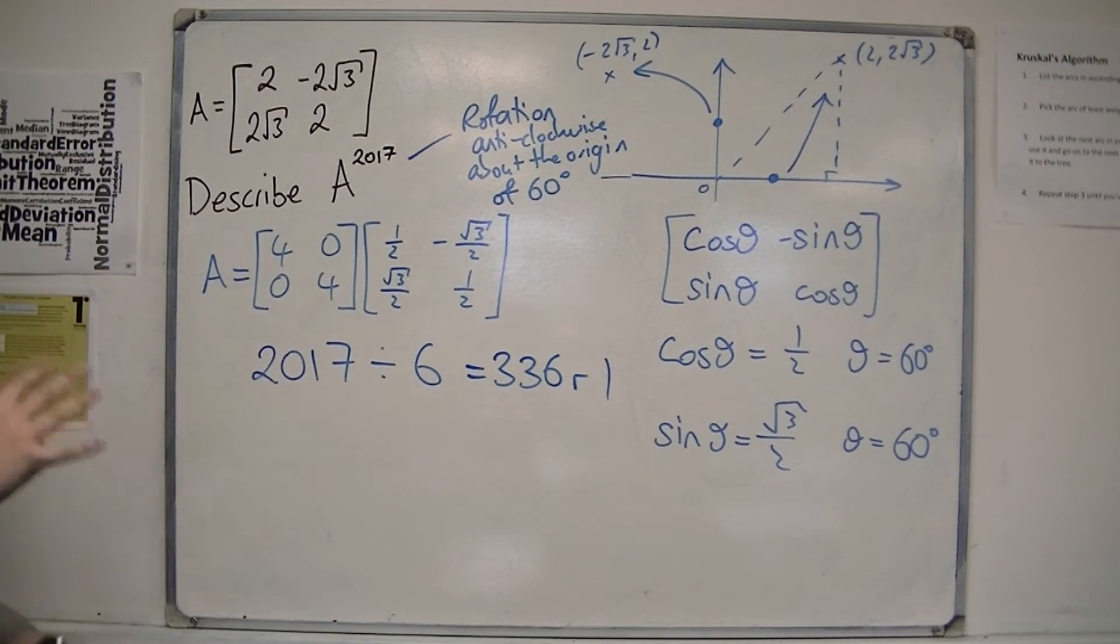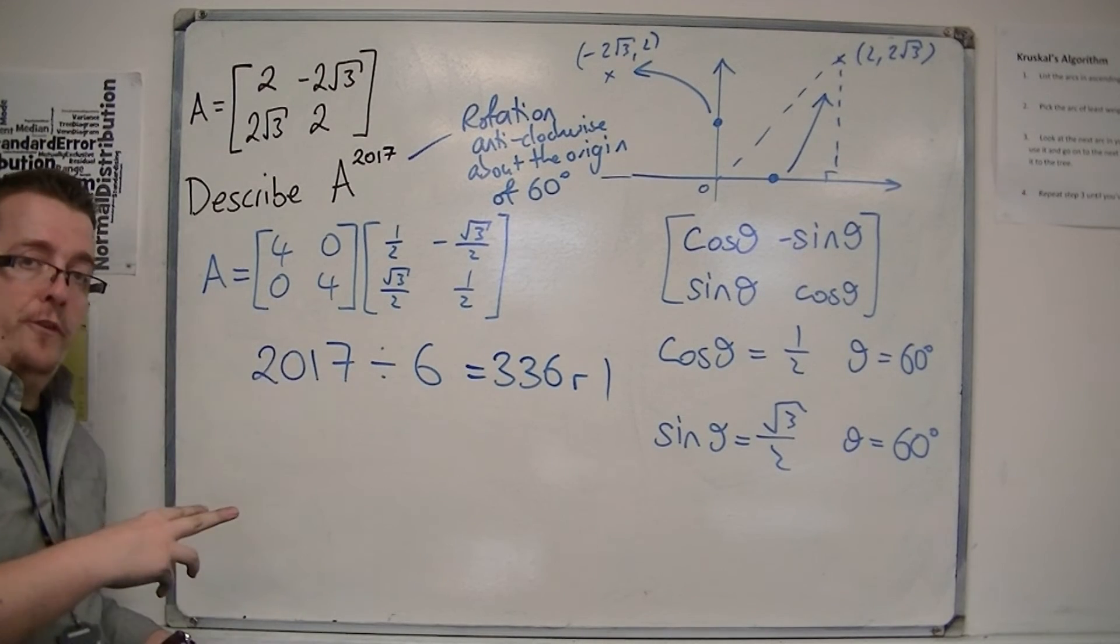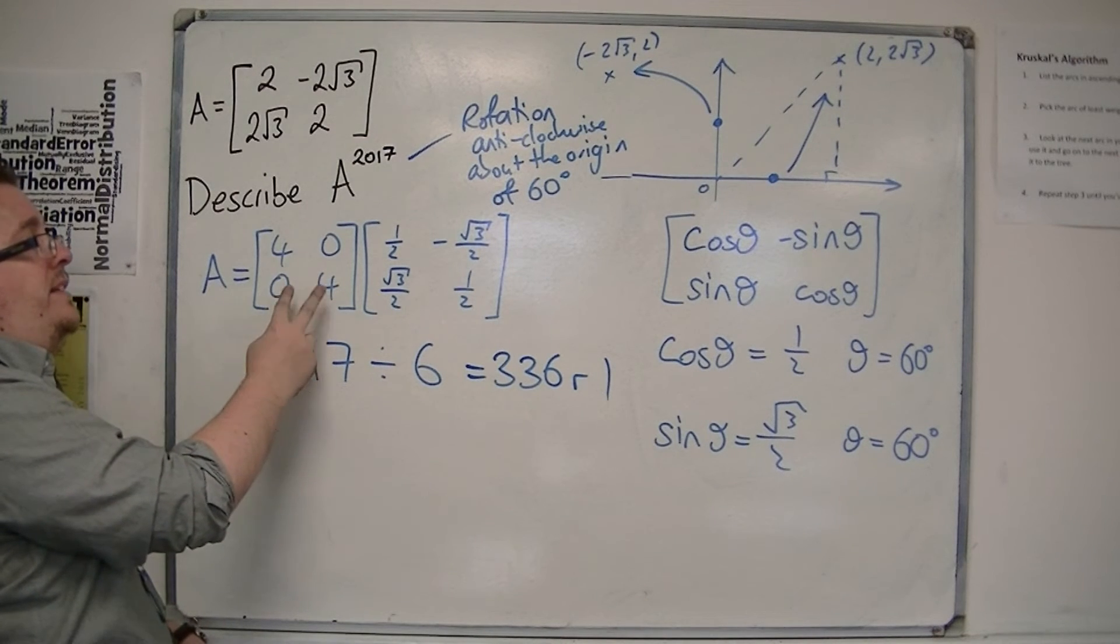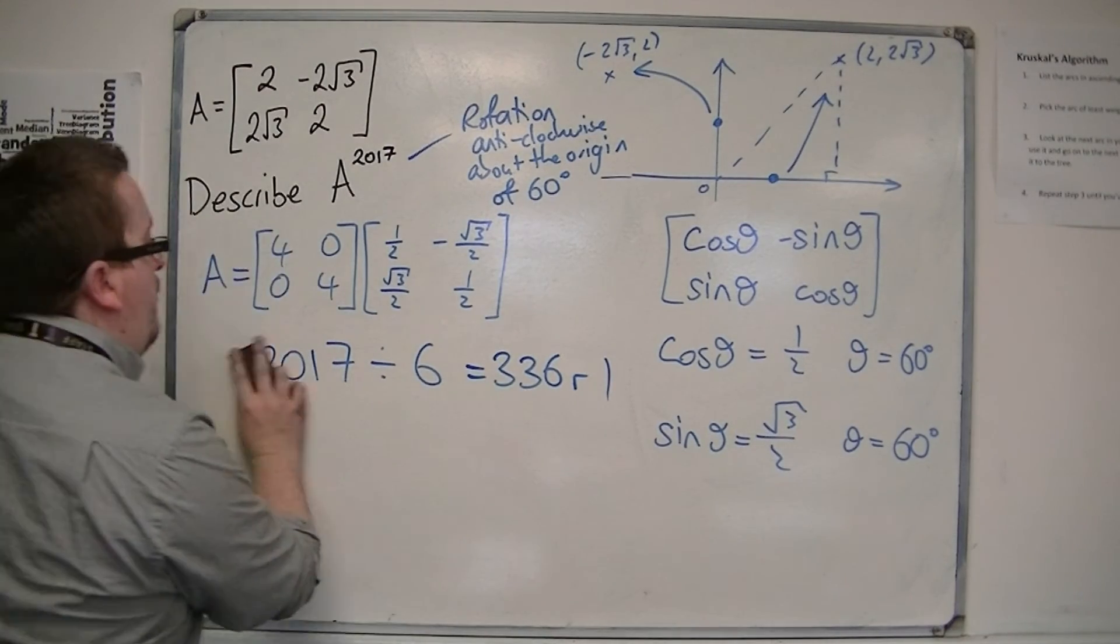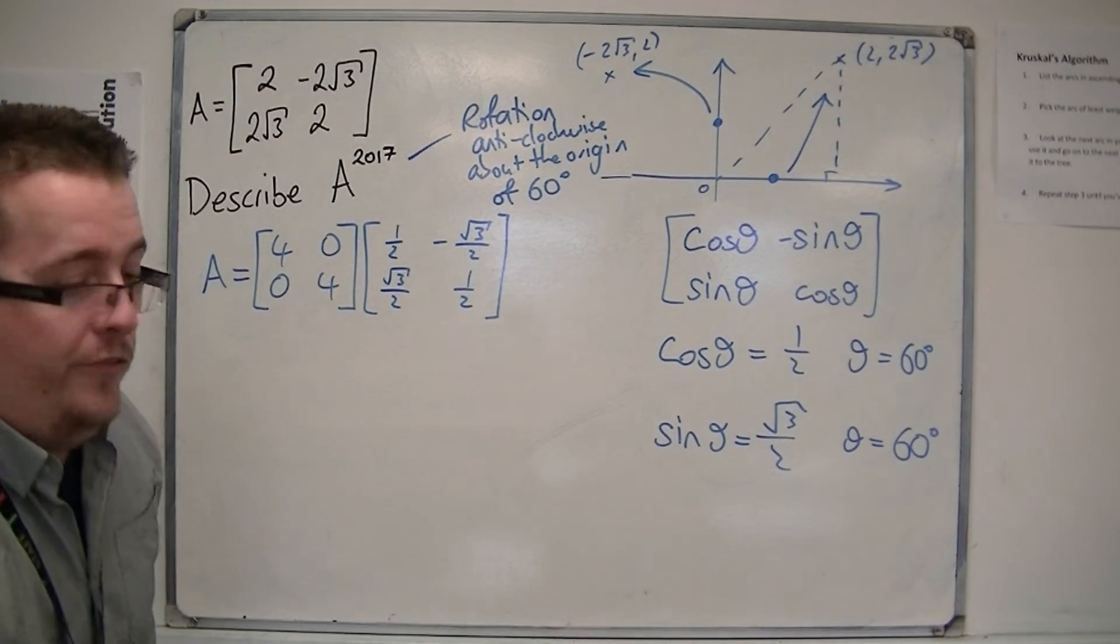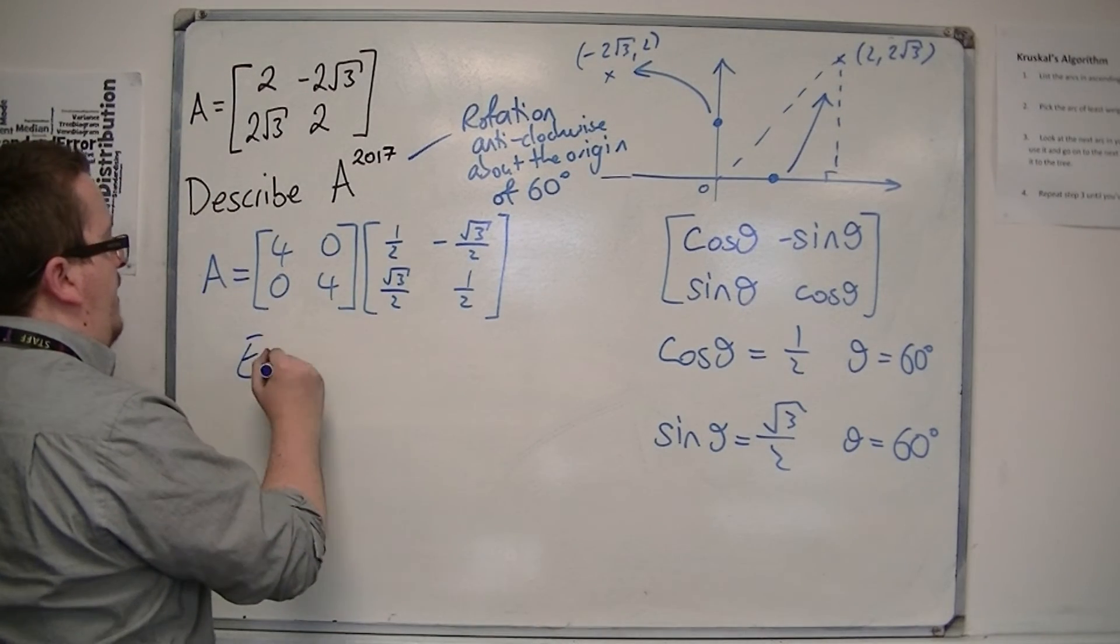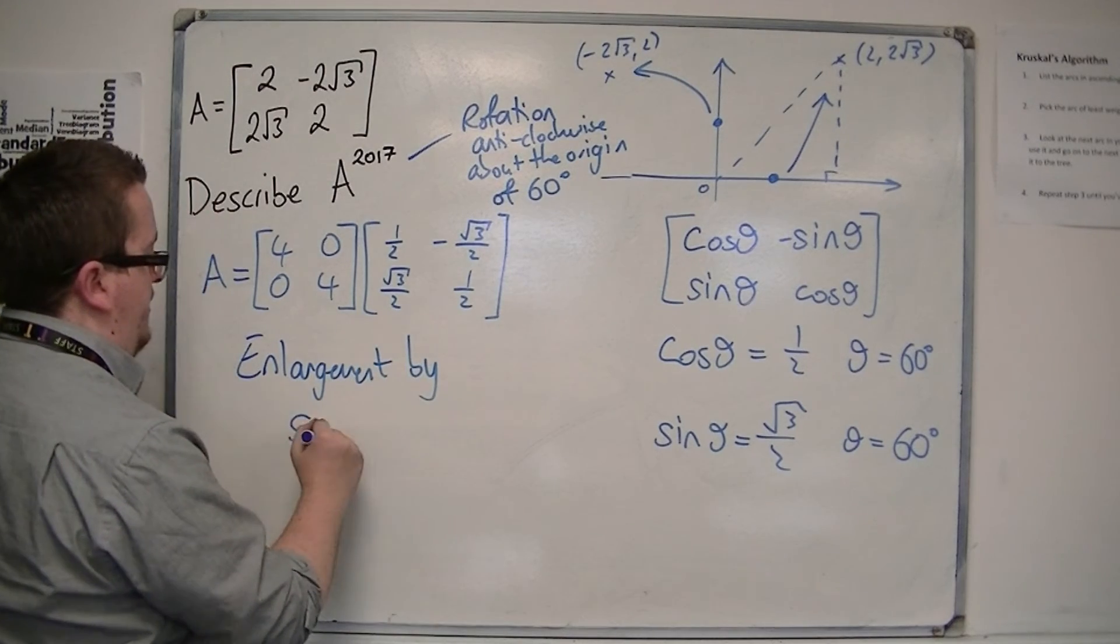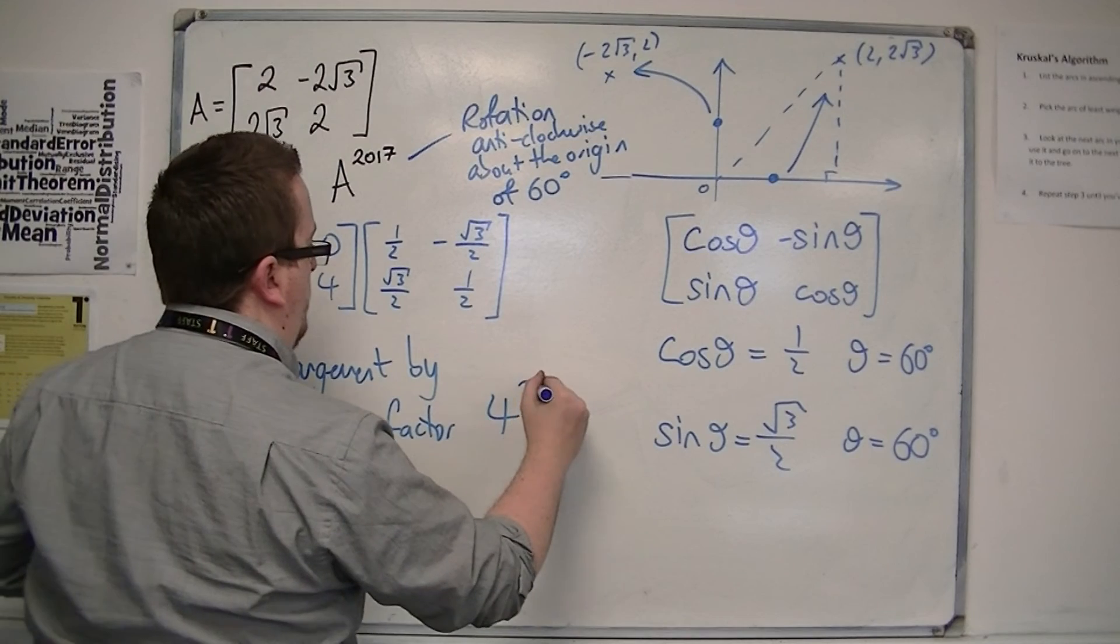But I've also got that enlargement. Now, the enlargement itself has also been applied 2017 times. And so, this is an enlargement where I've multiplied by 4 2017 times. So, it's also an enlargement by scale factor 4 to the 2017.